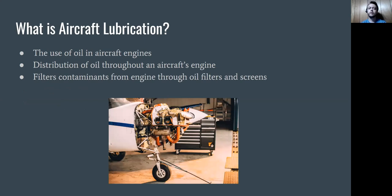What is aircraft lubrication? Aircraft lubrication is the use of oil in aircraft engines to lubricate, cool down the engine, and carry contaminants away from engine parts. It involves the distribution of oil throughout an aircraft's engine through a pressure system, and it also filters contaminants through filters and screens found in the oil system.